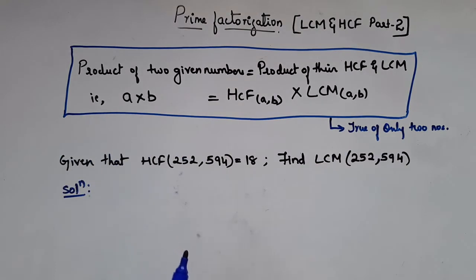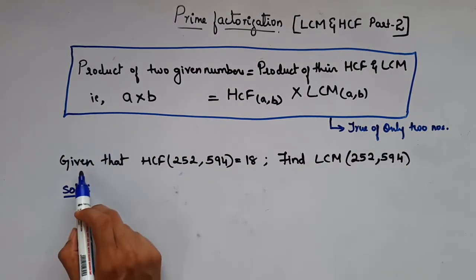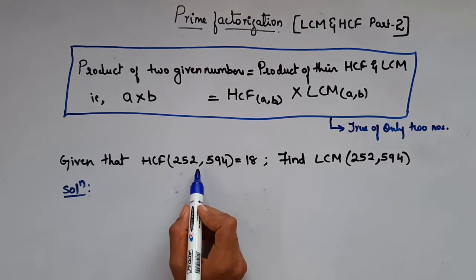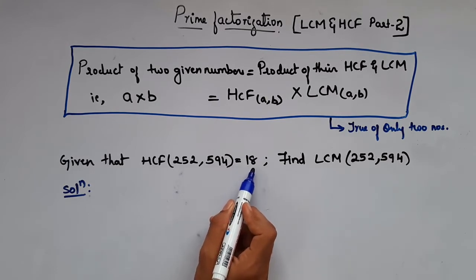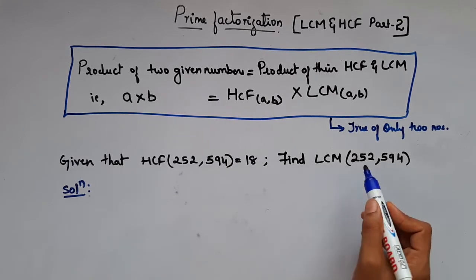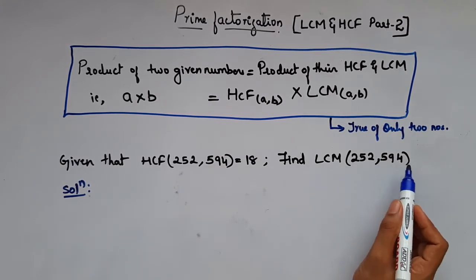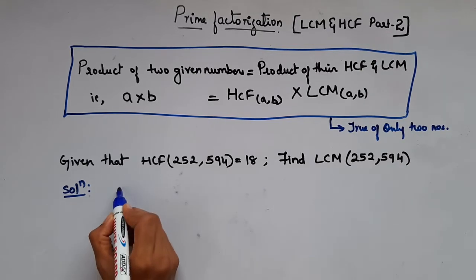Now let's see this problem. Given that HCF of 252 and 594 is 18, find LCM of 252 and 594. So here, what is given?